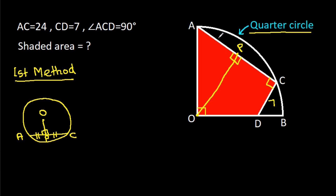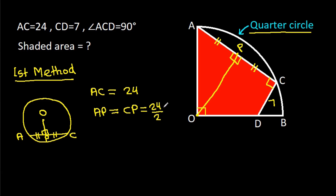So here also, AP will be equal to CP. And we have AC is 24, so AP will be equal to CP, that will be 24 divided by 2, and it is 12. So AP is 12 and CP is 12.